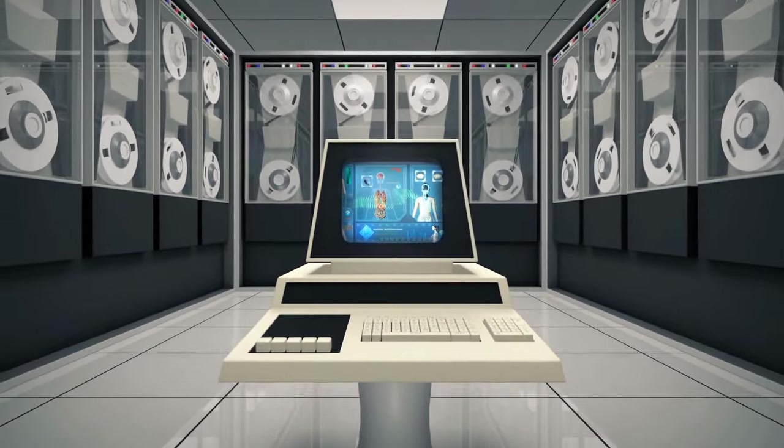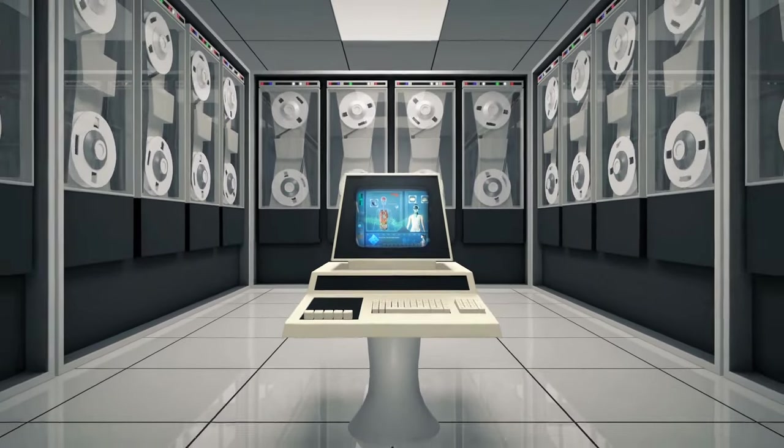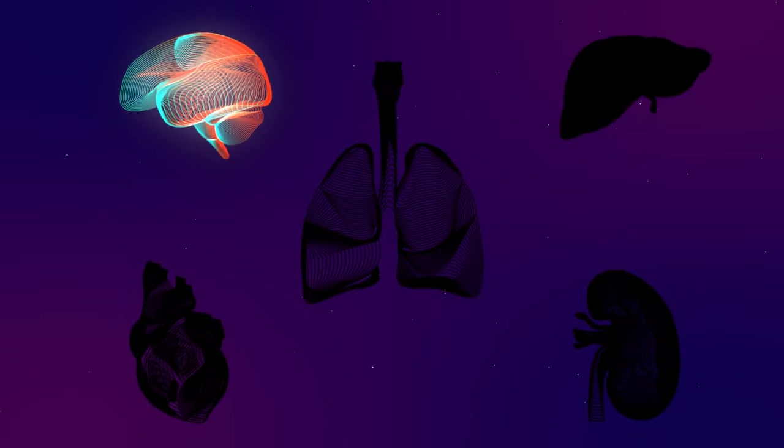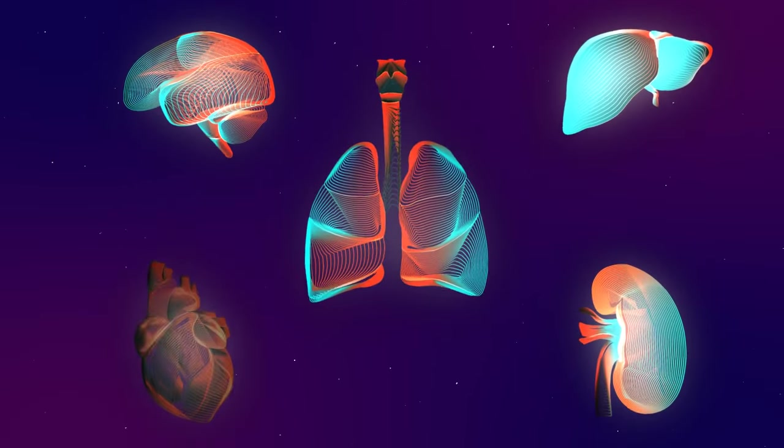Your body has 78 organs, but only 5 of them are essential for survival. The brain, liver, kidney, lungs, and heart.